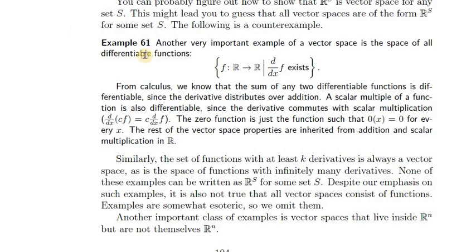Here's another example that derives from the previous one and is very important: functions from the real numbers to the real numbers such that the derivative of the function exists. This is a subset of the previous vector space — functions from reals to reals — but restricted to differentiable functions. We call this a subspace. It's only a vector space because the derivative ddx is a linear function, and the linearity properties of ddx make it possible to prove all the vector space axioms.